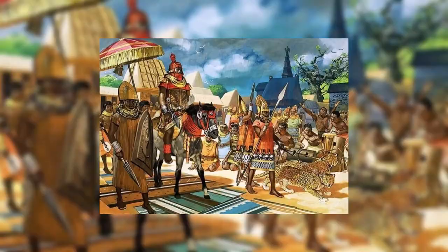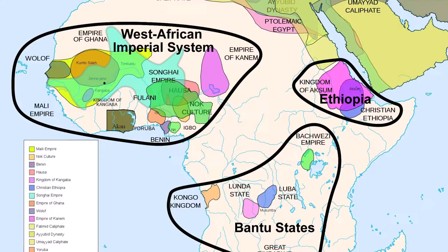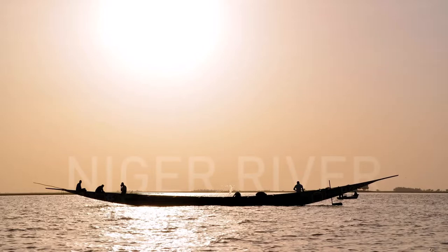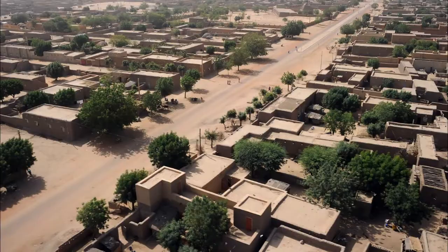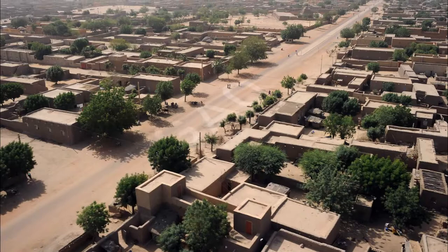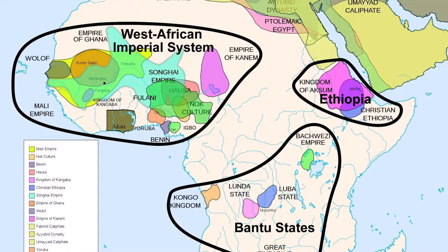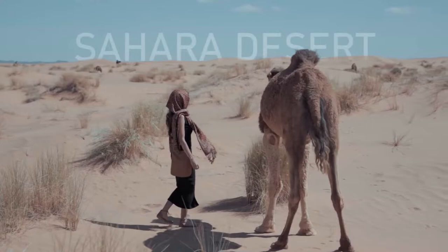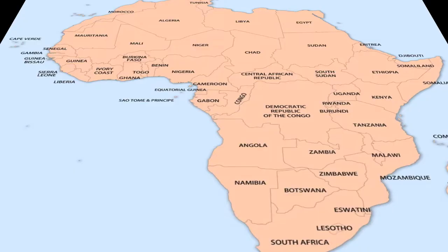Where was the Empire of Mali located? The Empire of Mali was located in Western Africa. It grew up along the Niger River and eventually spread across 1,200 miles from the city of Gao to the Atlantic Ocean. Its northern border was just south of the Sahara Desert.